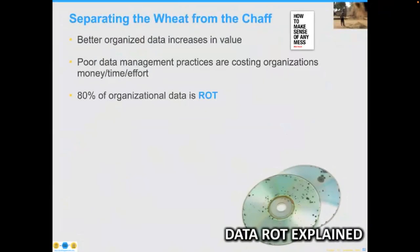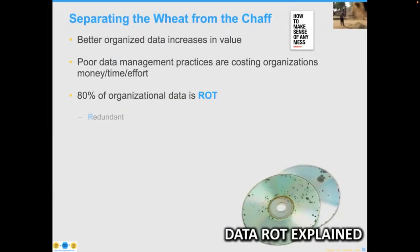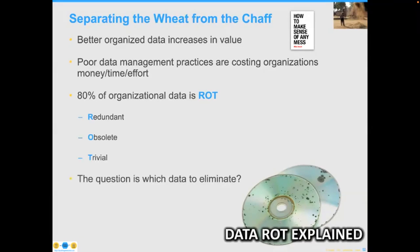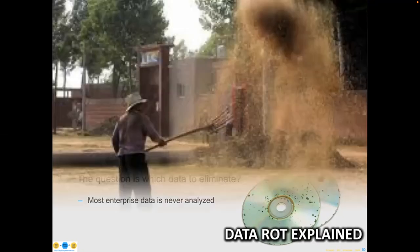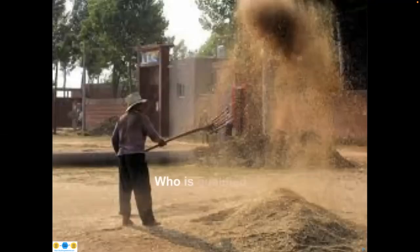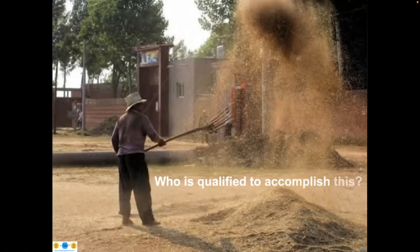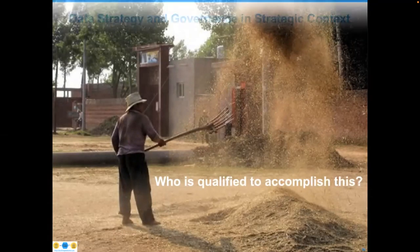The next rule is the rule of rot: 80% of your organization's data, minimally, is redundant, obsolete, or trivial. The question becomes: which data do I eliminate? Nobody wants to answer that question, but most enterprise data is never analyzed. So the question for your organization is: who is qualified to perform this process of elimination?